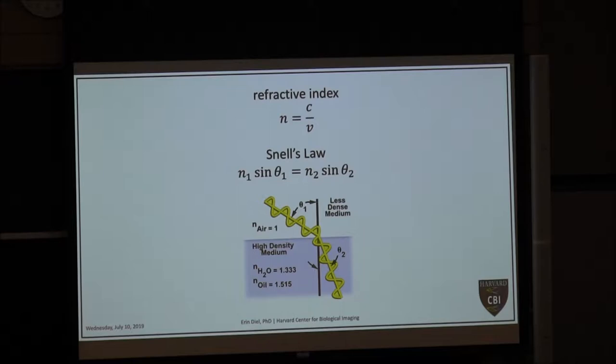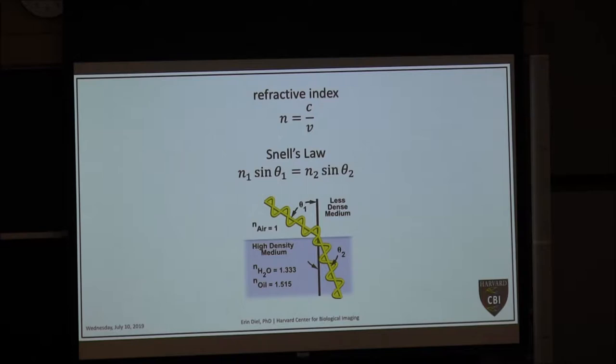We talked a couple weeks ago about refractive index — each material has a refractive index describing how fast light moves through that medium compared to the speed of light in a vacuum. Typically a material will slow light down and have a refractive index slightly higher than one. Glass, for example, would have a higher refractive index than air. We can calculate how much light will bend as it refracts from one medium to another using Snell's law: n₁ sin θ₁ = n₂ sin θ₂.